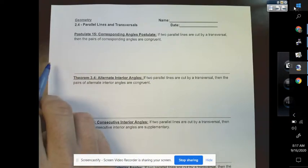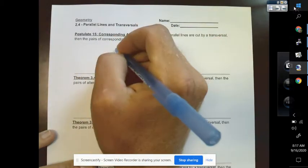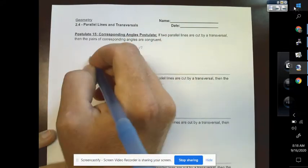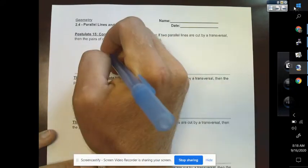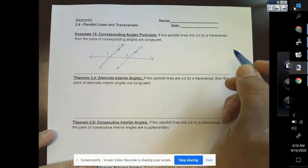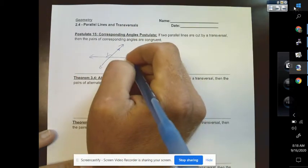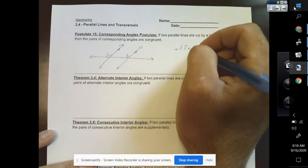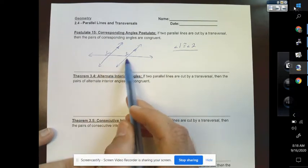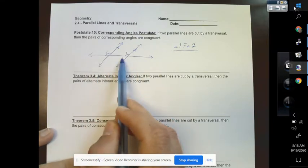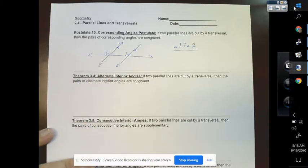Our first one is called postulate 15, corresponding angles postulate. If two parallel lines are cut by a transversal, so here's my two parallel lines, and I put my little arrows here to show that. And I'm cutting a transversal through it. Now, the corresponding angles are going to be congruent. So, I'm going to give you guys one example of that. Here's one and two. One and two are corresponding angles because it's the top left-hand corner, top left-hand corner. But, if these lines are parallel, then we know that angle one is going to be congruent to angle two. And this works for all the corresponding angles. It's kind of cool. So, if I put like a three and a four here, they'd be the same. A five and a six, they'd be the same. And a seven and an eight, they'd be the same. Good stuff. Neat things happen when parallel lines are there.